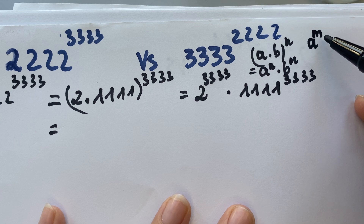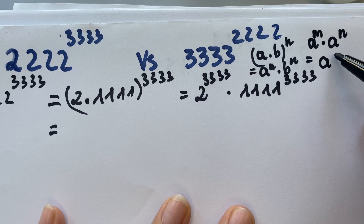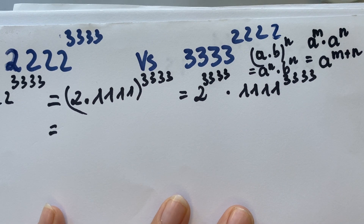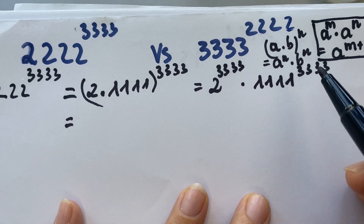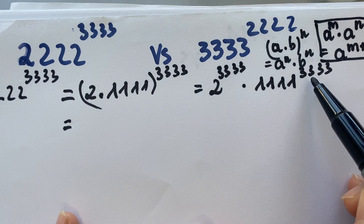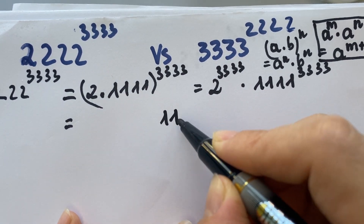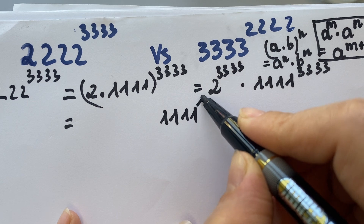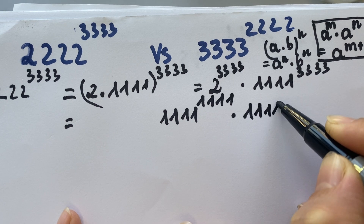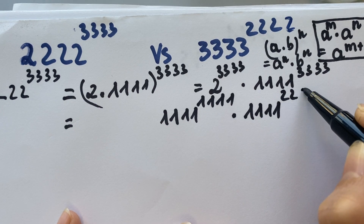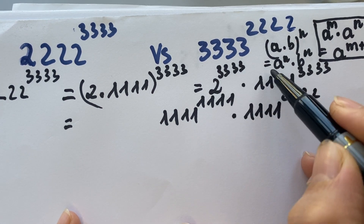Now apply another exponential rule: a^m times a^n equals a^(m+n). Therefore, you need to apply this rule. We have 1111^3333 equal to 1111^1111 times 1111^2222, because 1111 plus 2222 equals 3333.